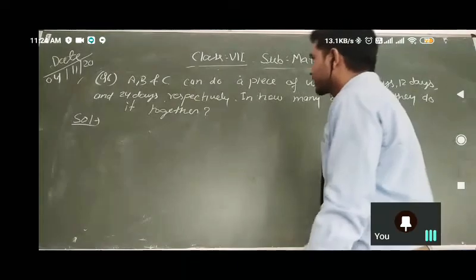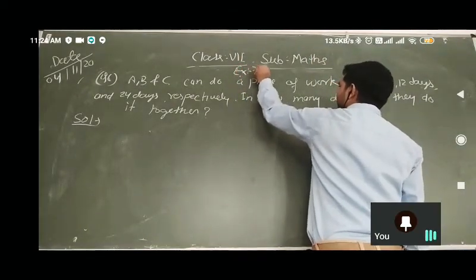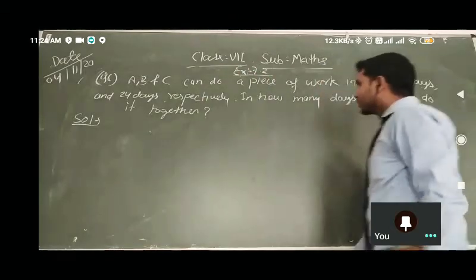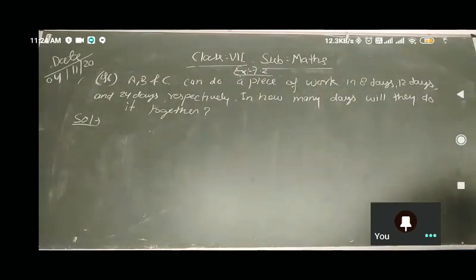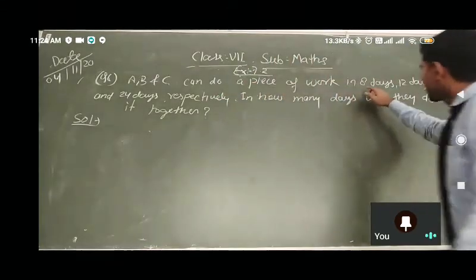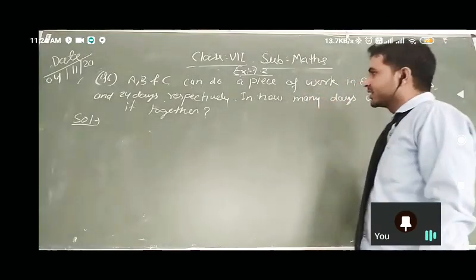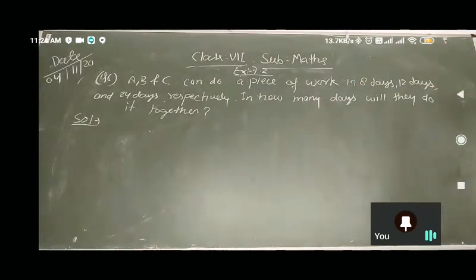Good morning students, start Exercise 7.2 question number 6. A, B, C can do a piece of work in 8 days, 12 days, and 24 days respectively. In how many days will they do it together?